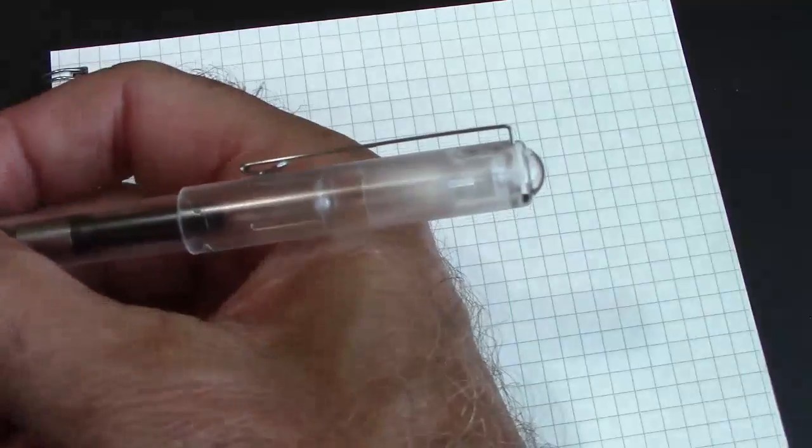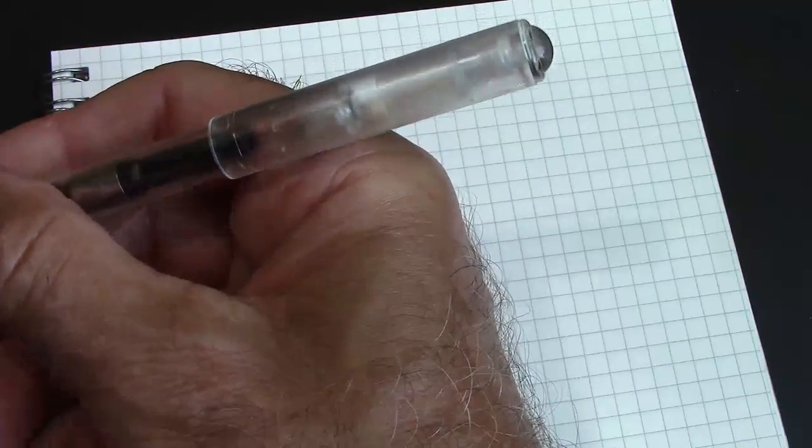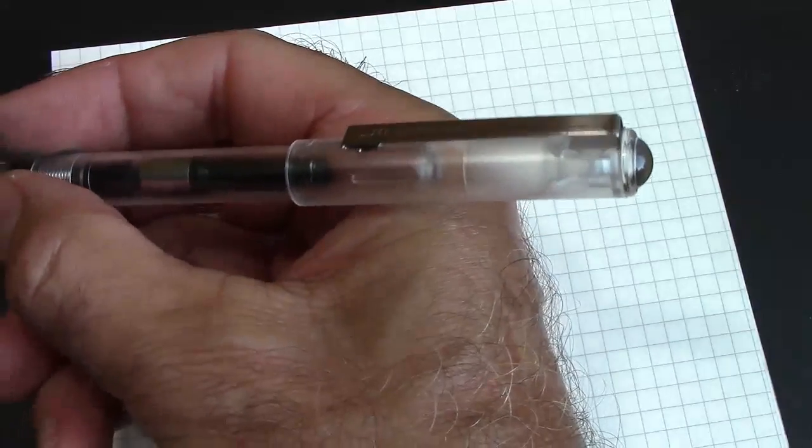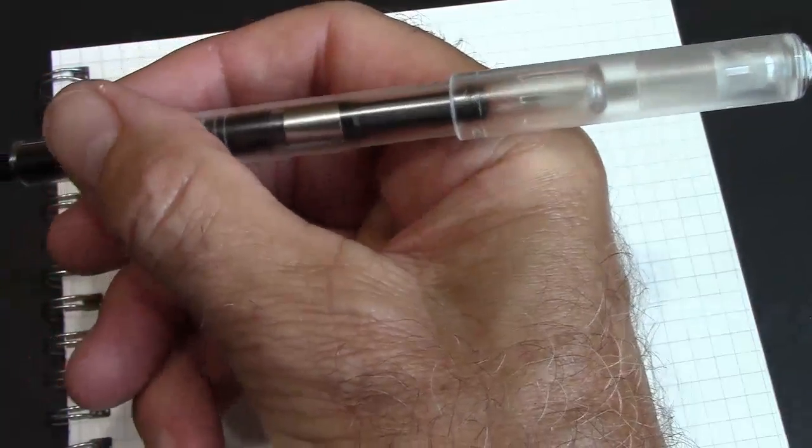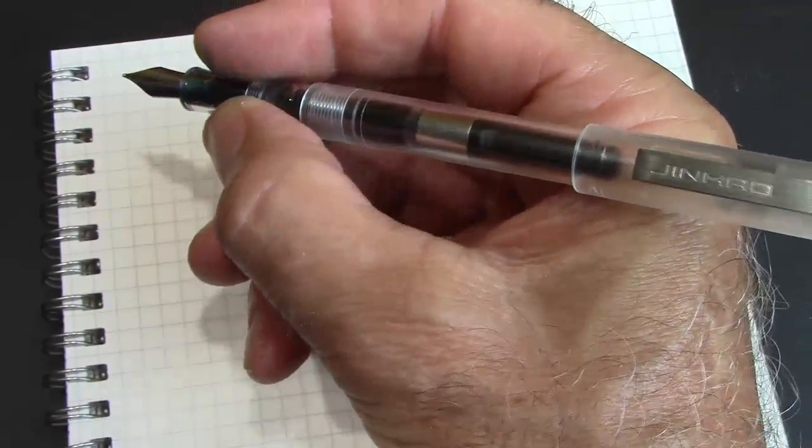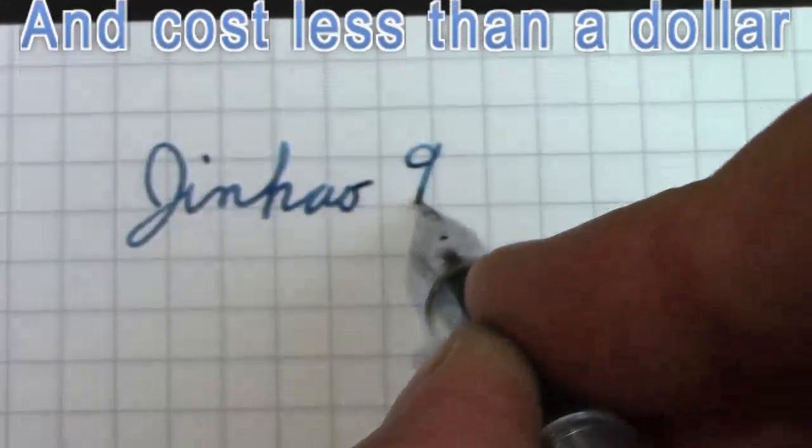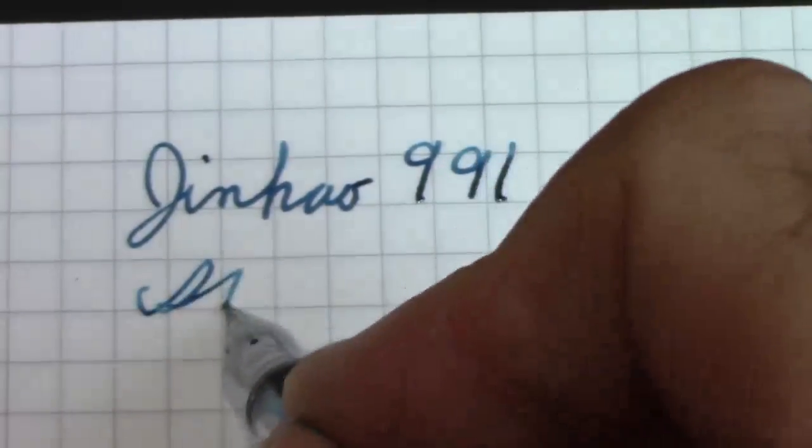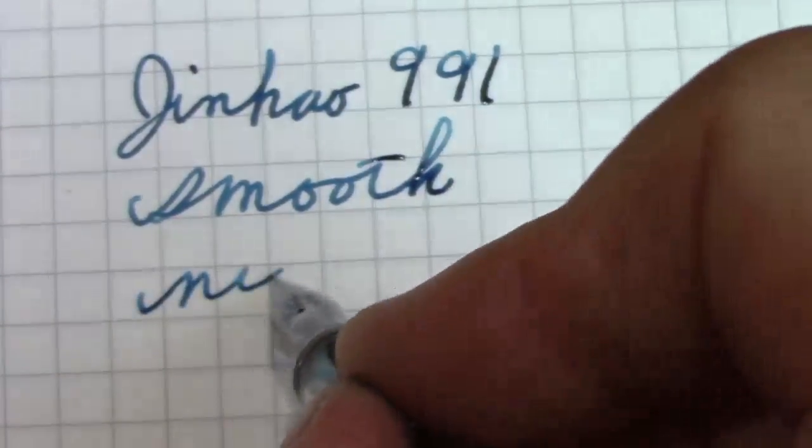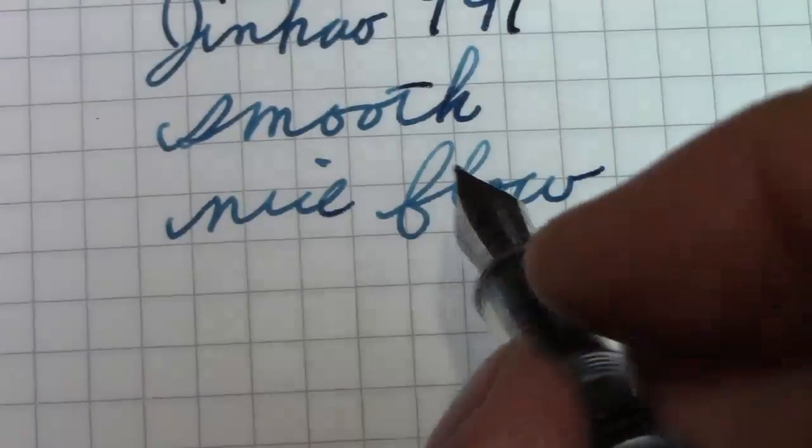And I guess one of the things that, as I look at the pen more, the matte finish kind of hides that insert there for the cap liner, because that's not a completely transparent liner like the 992. And this has a more simplistic design. So for those that like a better, cleaner design, this might fit into that category.